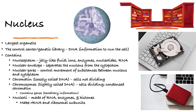Another thing I want to talk about is the nucleus. The nucleus is the largest organelle in the cell. We're going to see why a cell like a red blood cell will decide to dump its nucleus in order to do its job — if the job of a red blood cell is to carry oxygen and nutrients, and half of it is occupied by the nucleus, how is it supposed to do its job? So this is a control center, the genetic library — DNA is located there. All the information needed to run the cell is there.